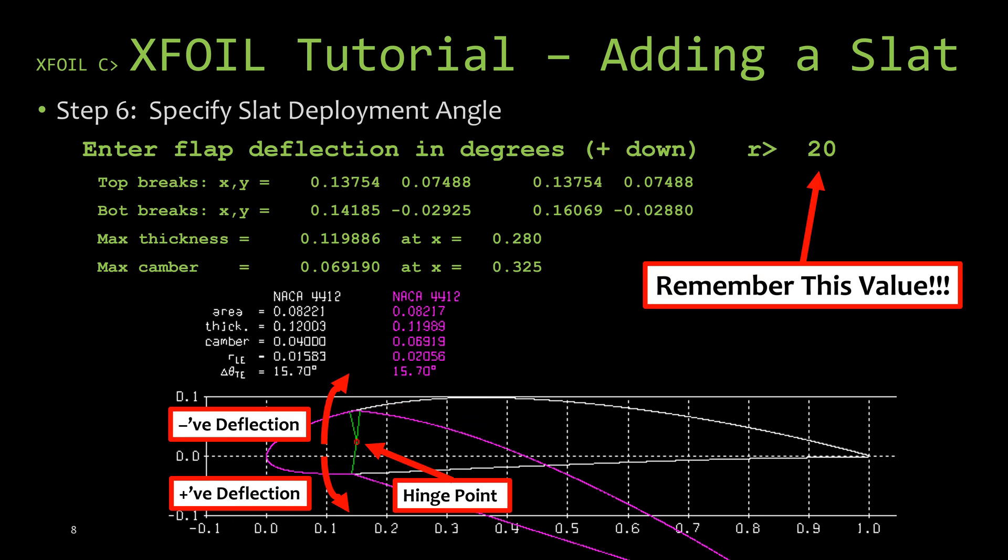Now the third piece of information that the flap command is looking for is the angle to deflect the slat. For this example, we're going to deflect the slat 20 degrees downward. Now the secret to this hack actually comes from this angle right here, so remember it. We're going to use it in the next step.